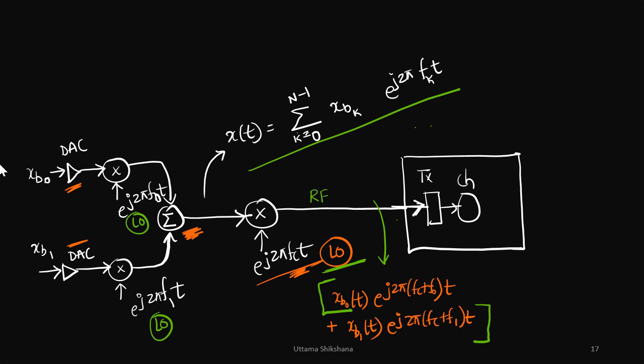So at the output of the multiplexer we can write the equation as shown here. Again I have not reduced any local oscillator. In fact we are seeing one more extra local oscillator here with respect to fc.